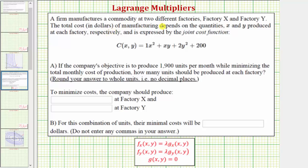A firm manufactures a commodity at two different factories, factory X and factory Y. The total cost in dollars of manufacturing depends on the quantities x and y produced at each factory and is given by C(x,y). If the company's objective is to produce 1,900 units per month while minimizing the total monthly cost of production, how many units should be produced at each factory? And then for this combination of units, what is the minimum cost?